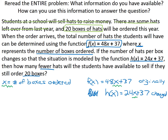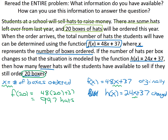What value am I going to substitute? Reading back through, I see they're ordering 20 boxes. So for my first equation, f of 20 equals 48 times 20 plus 37. Go ahead and get your calculators out. Typing that in: 48 times 20 plus 37 gives me 997 hats.